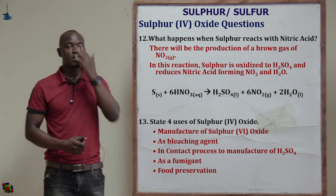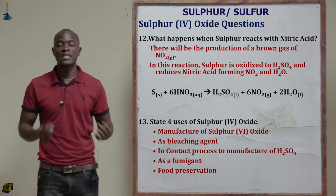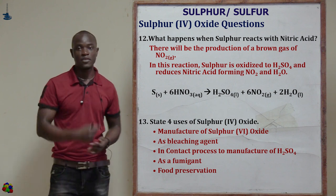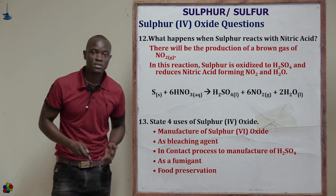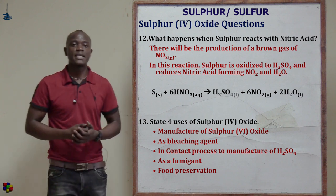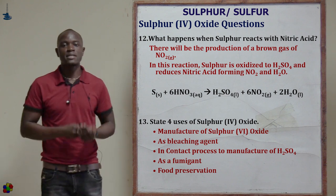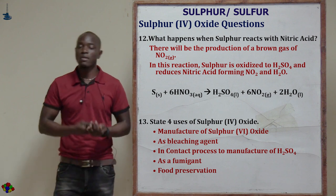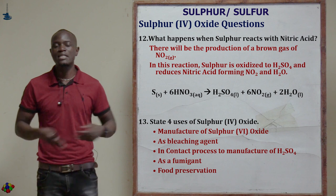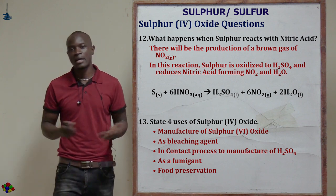Question thirteen asks: state four uses of sulfur 4 oxide. The uses are: it acts as a bleaching agent; it acts as a fumigant; it acts as a food preservative; and it helps in the manufacture of sulfuric acid and sulfur 6 oxide.